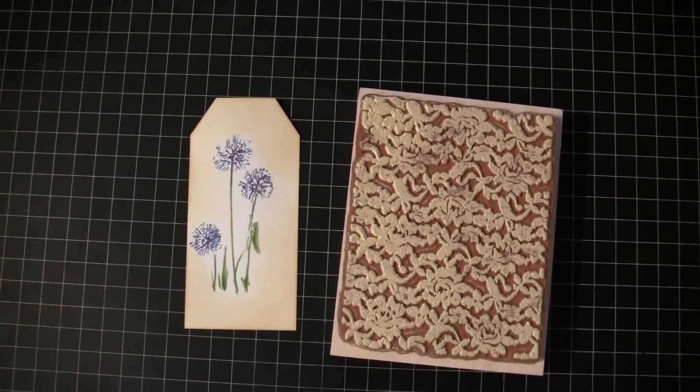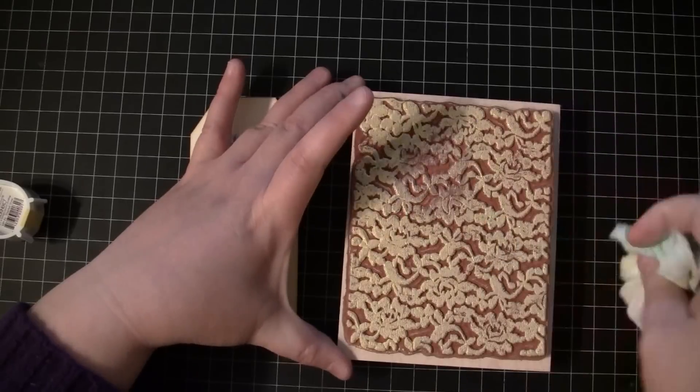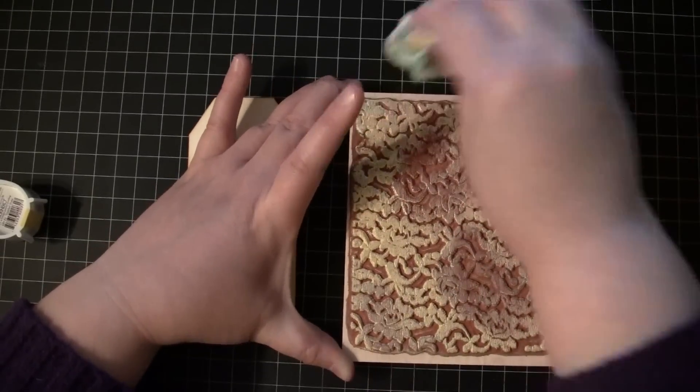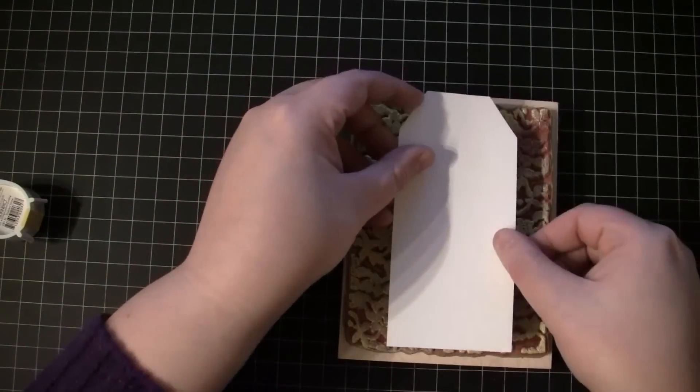And this will create a really soft, subtle background, stamping it onto that color of Distress Ink Scattered Straw that we already put on the tag. So I've applied the ink and I'm rubbing off some areas with the baby wipe.